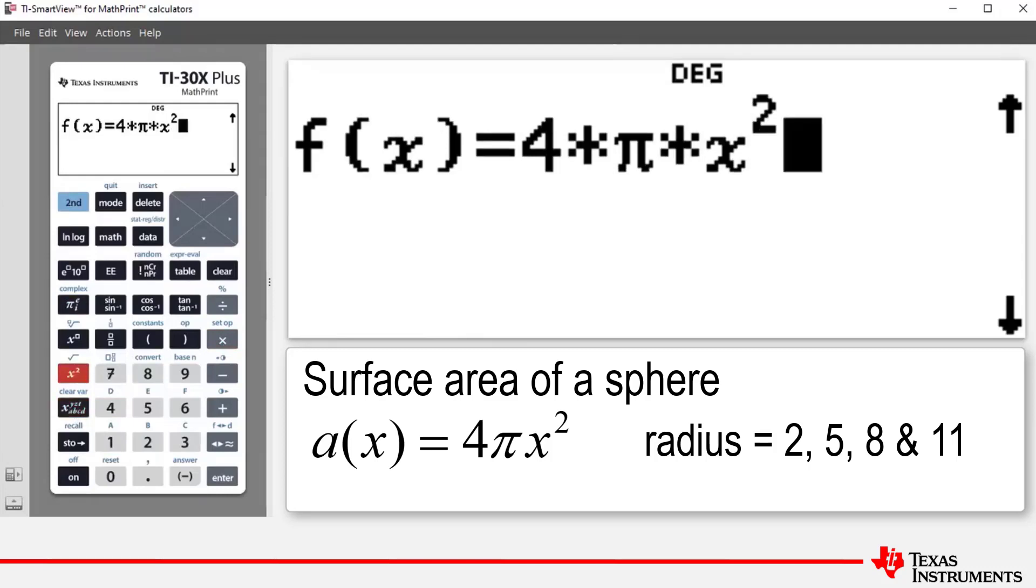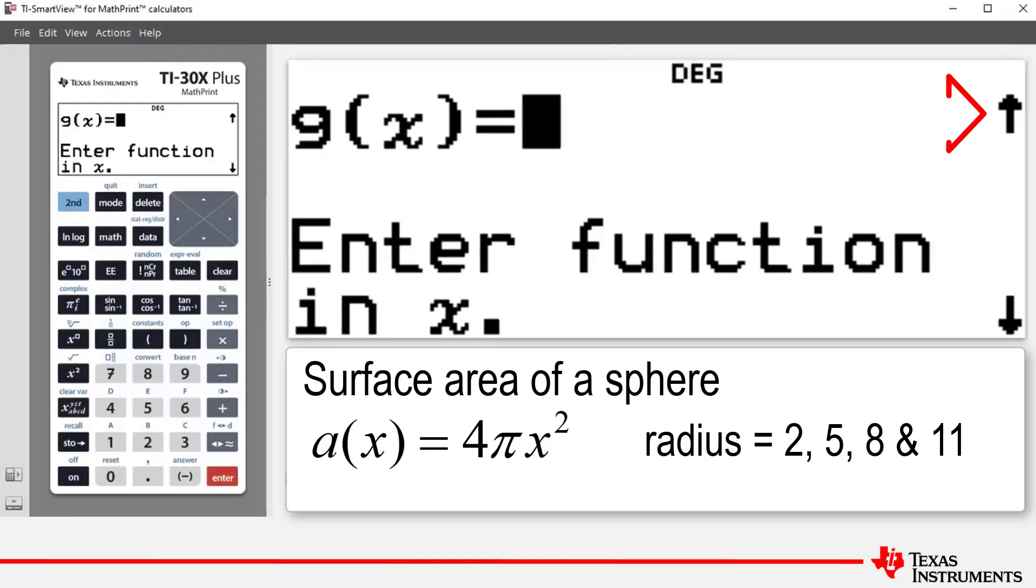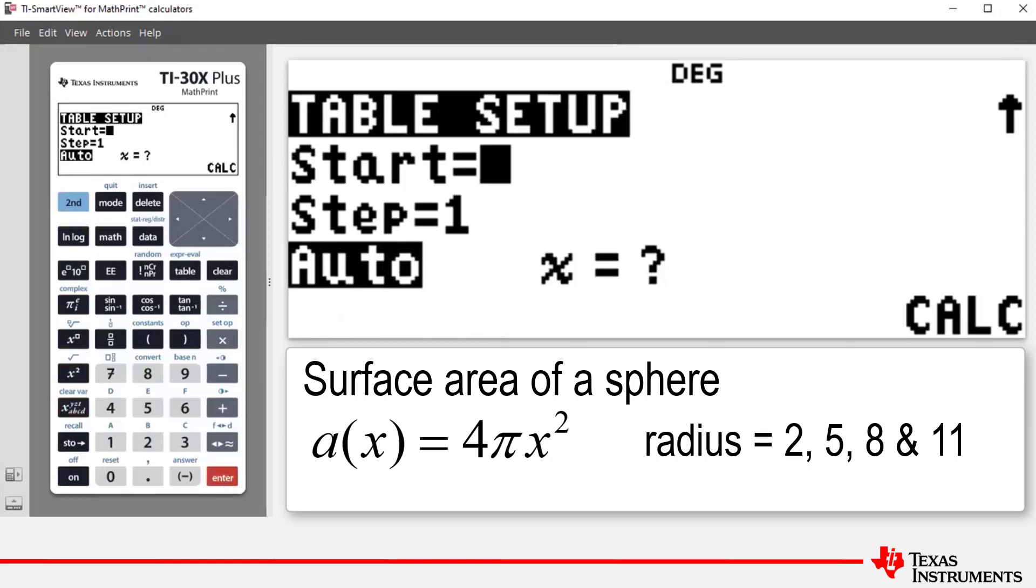So we've entered our function and once we've done that we now press enter. Now notice these arrows. We can either scroll down or we can press enter again and it takes us to our table setup. Start specifies the starting value for x and notice at the moment it's set to zero.